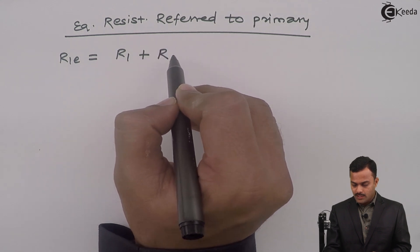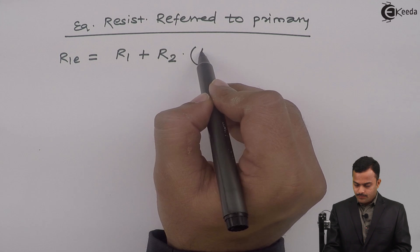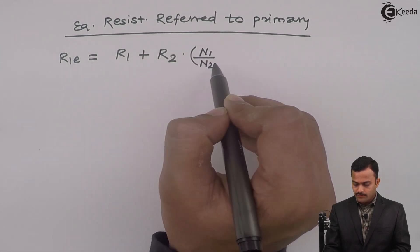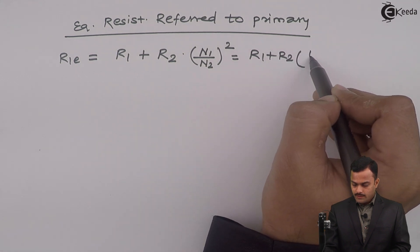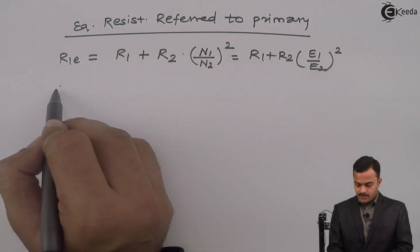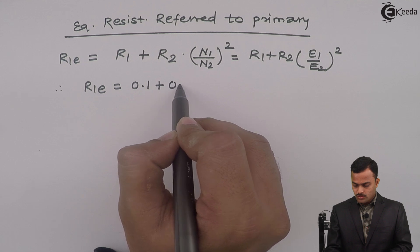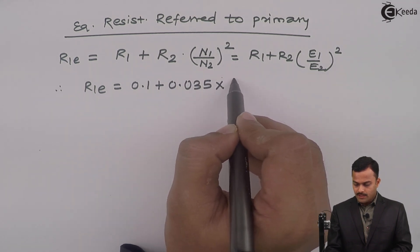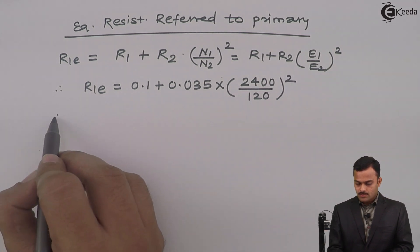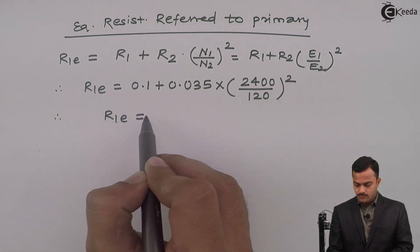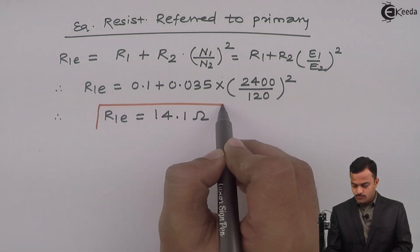To refer secondary resistance to the primary side, we use the formula: R1E = R1 + R2 × (N1/N2)², which equals R1 + R2 × (E1/E2)². Substituting values: R1E = 0.1 + 0.035 × (2400/120)² = 0.1 + 0.035 × 400 = 14.1 ohm. This is the equivalent resistance referred to the primary side.